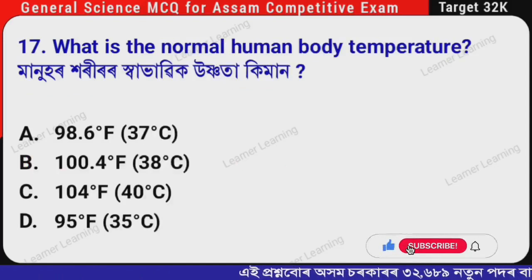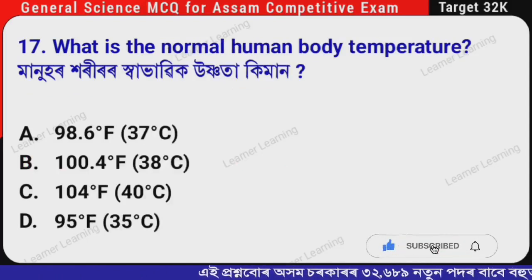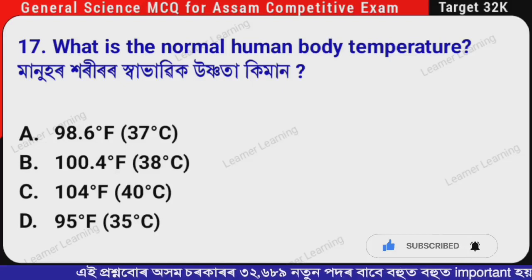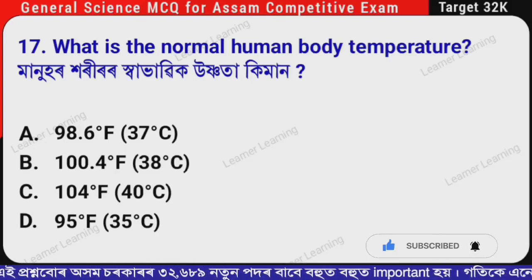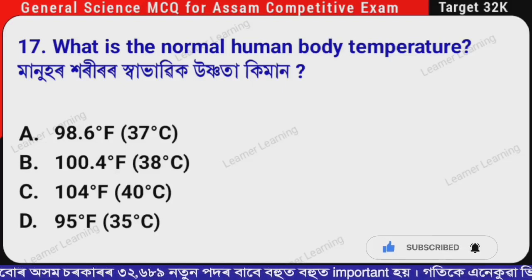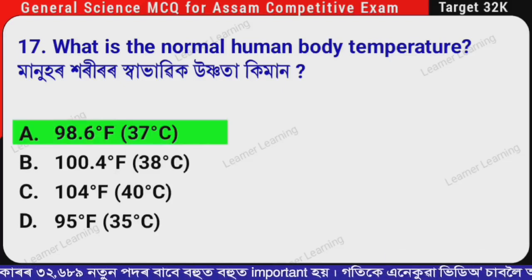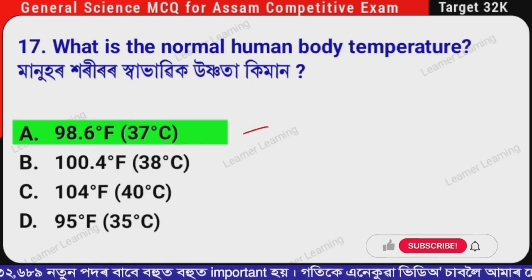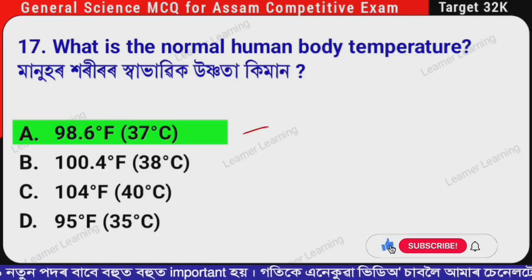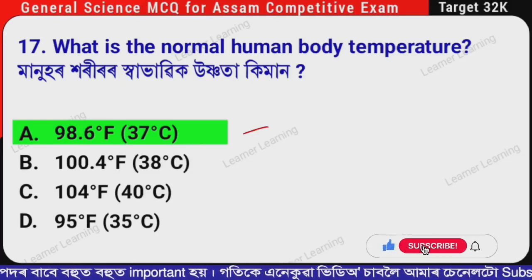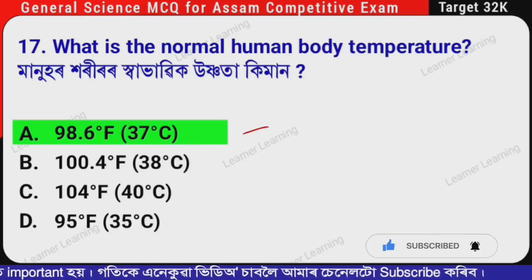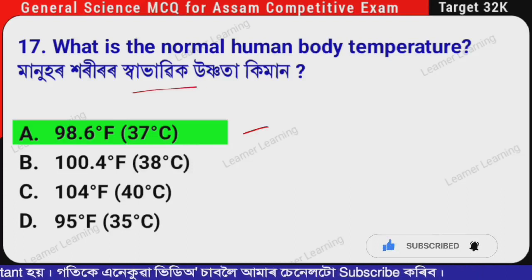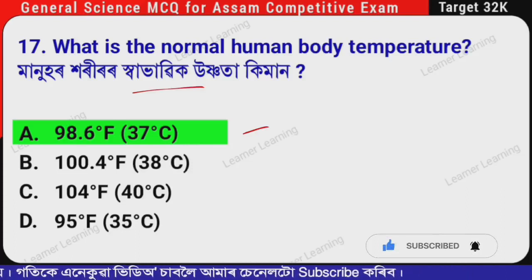Next question: What is the normal human body temperature? (Assamese: Manophori rar haabhavik usna ta ki man?) The correct option is Option A — 98.6 degree Fahrenheit, which equals 37 degree Celsius. That is the normal human body temperature.